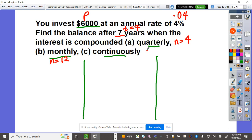Continuously is something new which I'll do in a while. For letter A, A = 6,000(1 + 0.04/4)^(4×7). Simplify this before giving the answer. 0.04 divided by 4 gives 0.01, plus 1 equals 1.01.